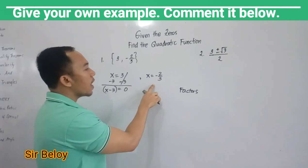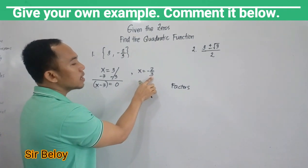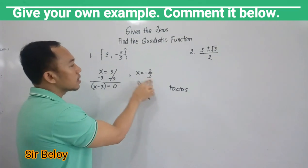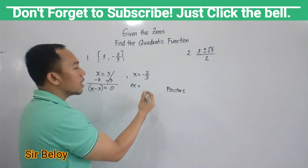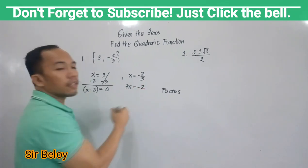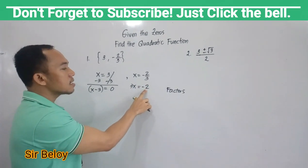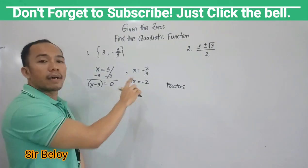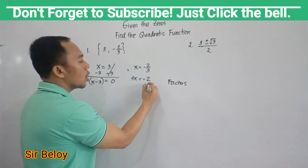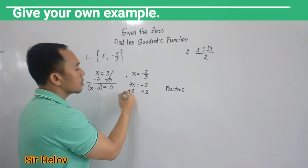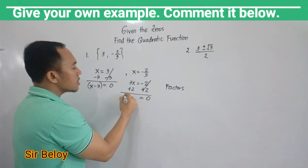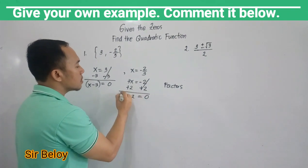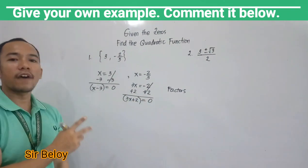For the second factor, you have to cross-multiply this denominator. You have fractions. 3 times X, you have 3X, equals the numerator. Then make this negative 2 as 0. How? By its opposite side, plus 2 both sides. So this is now 0. Then the next factor is 3X plus 2. So you have two factors.